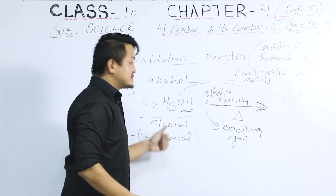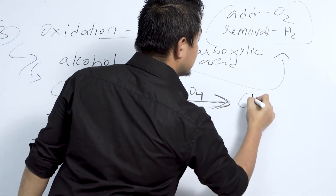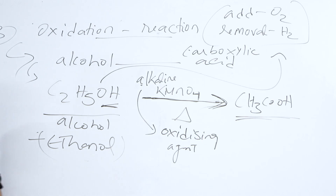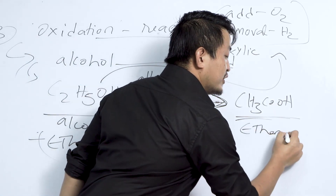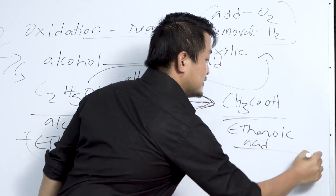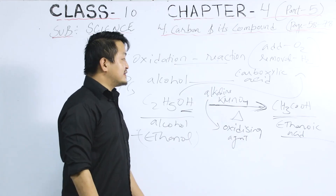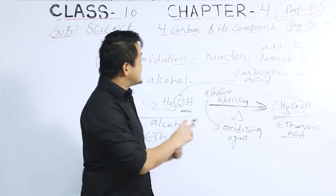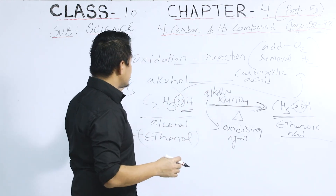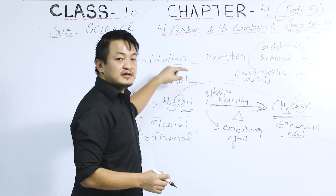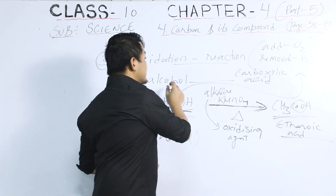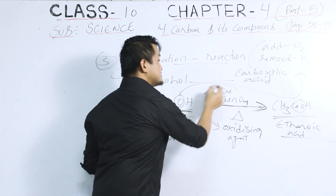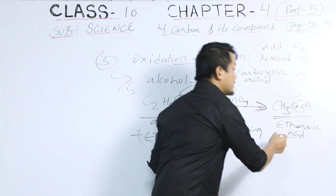As a result of this reaction, we will get ethanoic acid. We can see there is an addition of oxygen — oxygen has increased. This is the simple concept of oxidation reaction for carbon: we are converting alcohol to carboxylic acid using alkaline KMnO4 as the oxidizing agent.